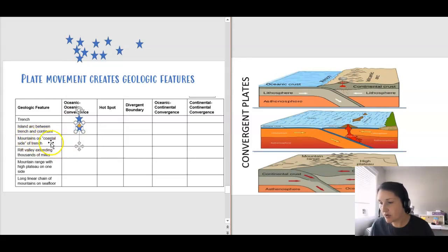Mountains on the coastal side of the trench. We don't have that here, so we're going to leave that space blank. A rift valley extending for thousands of miles. I don't see anything about a rift valley here, so we'll leave that one blank. A mountain range with high plateau on one side. It doesn't mention anything about a plateau in this mountain range, so we will also leave that blank. And then a long, linear chain of mountains on the seafloor. I think you could mark that one too, because we've got this island arc and these mountains are connected to the seafloor.